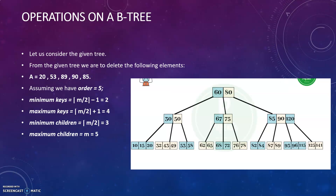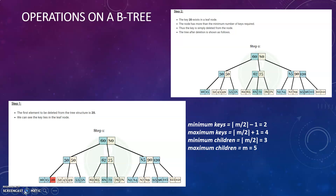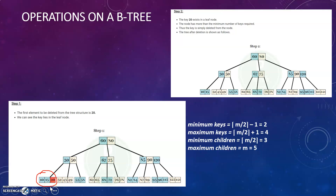First, I want to delete node 20. You can see 20 is in the leaf node, and this particular node contains a sufficient number of keys, so you can directly delete 20 from there. The minimum number of keys is 2; here the number of keys found is 3, so it satisfies the rule and you can directly delete 20.